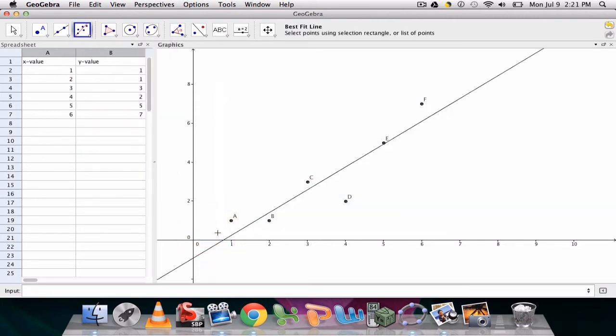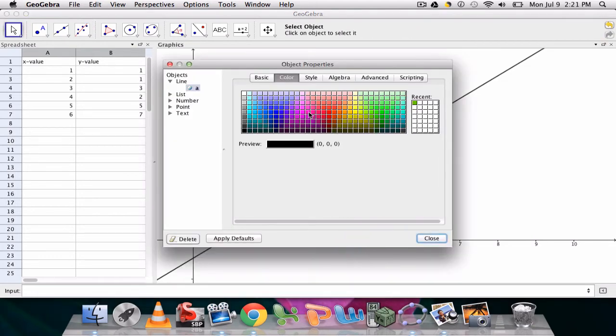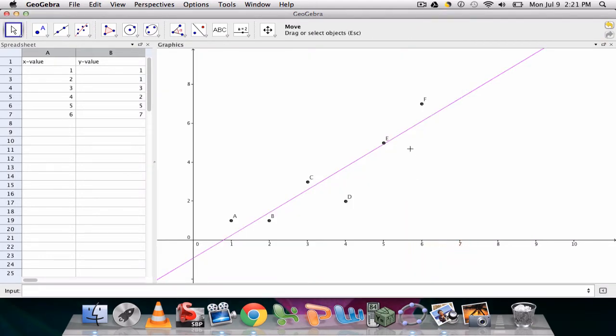We would probably right-click and then go to our object properties and change the color of this object just to highlight what's happening, and there we have it.